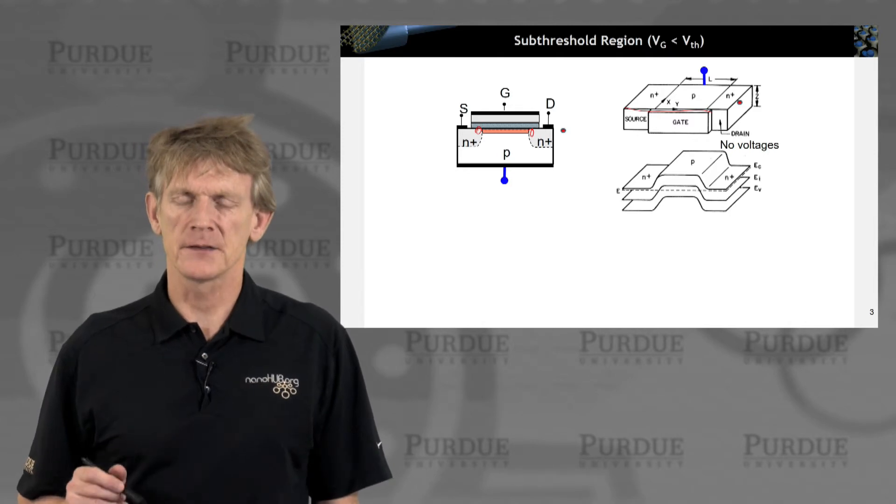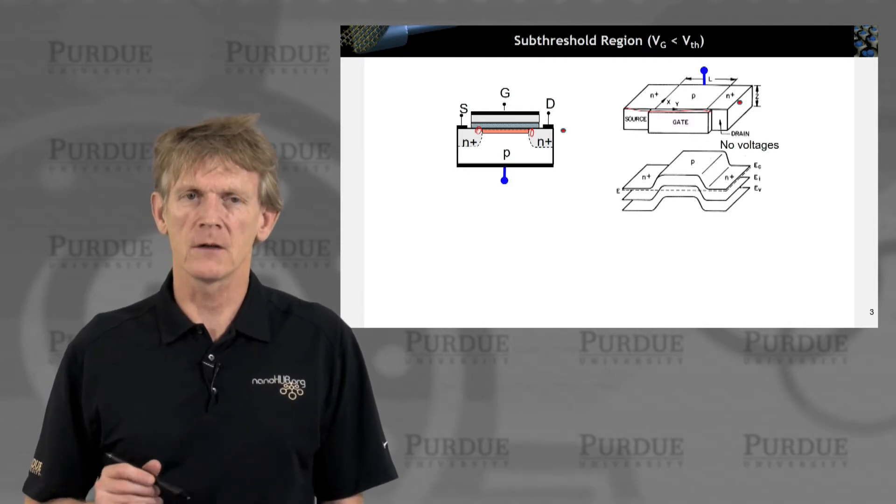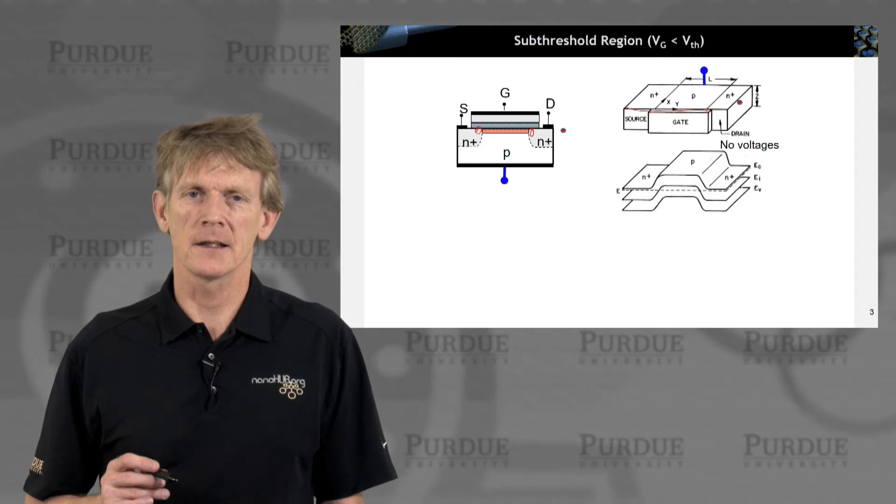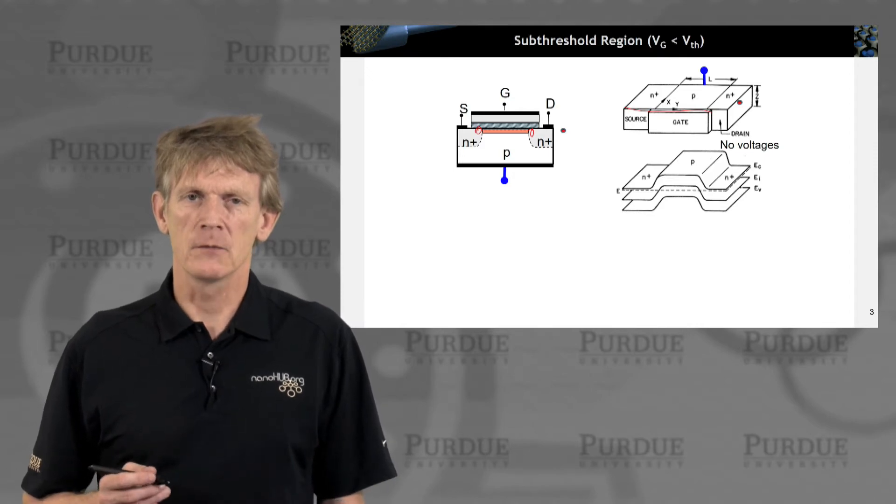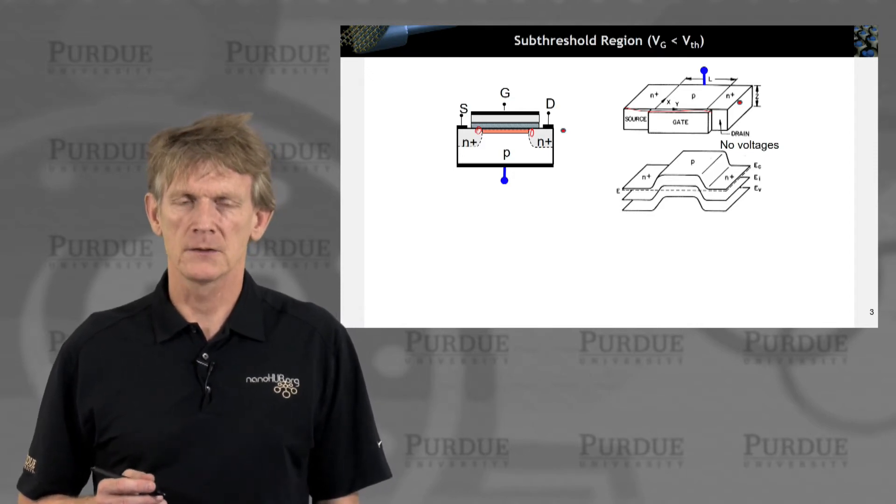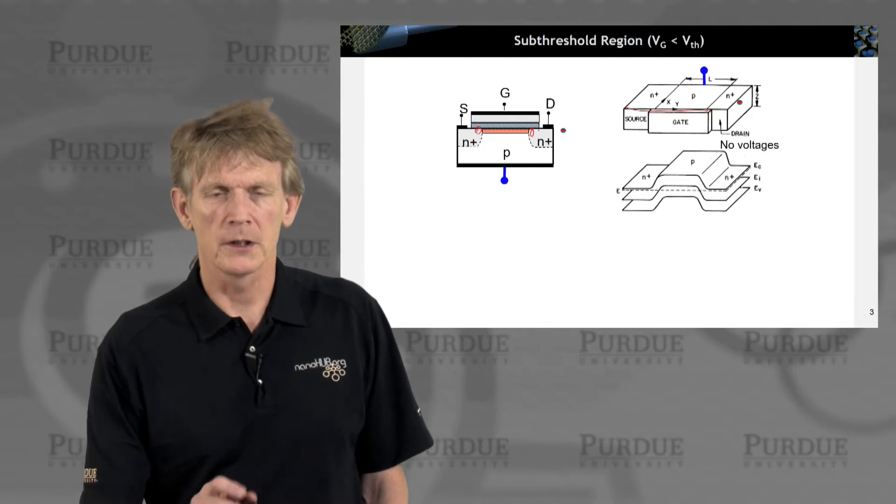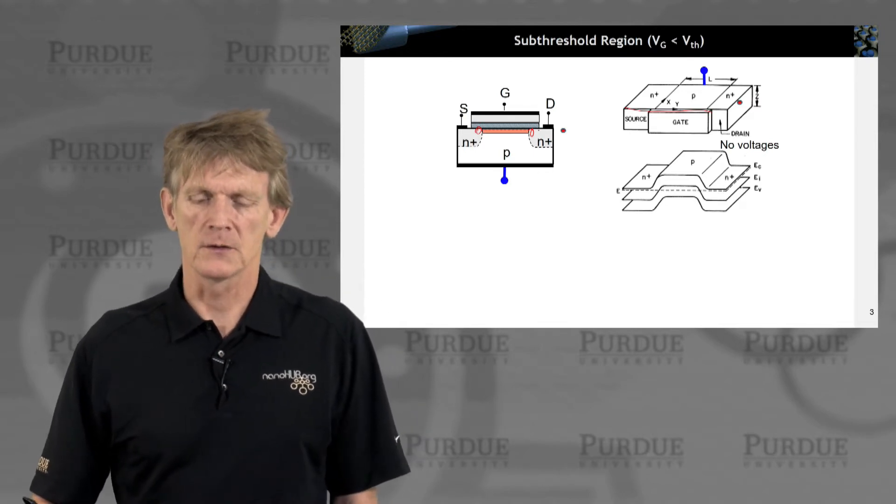So you basically have again PN diodes that are back-to-back, but in the classical sense these diodes are quite far away from each other. So they're not like the BJT where the junctions are pretty close.